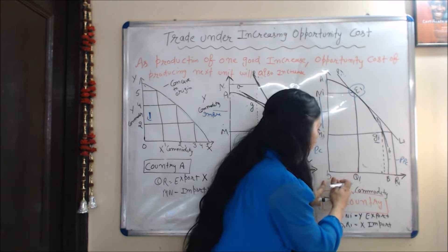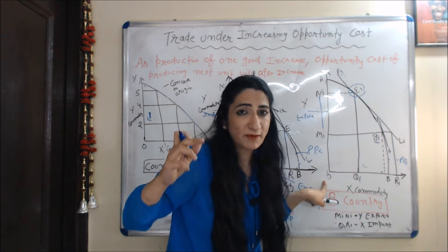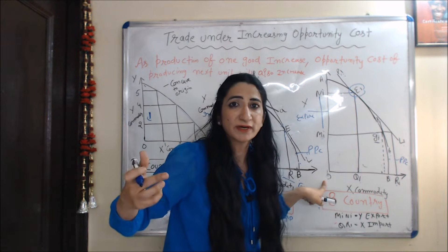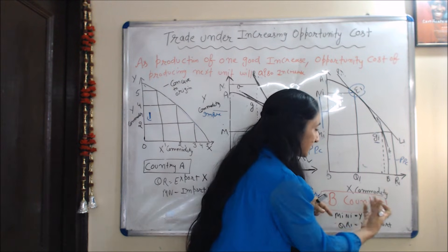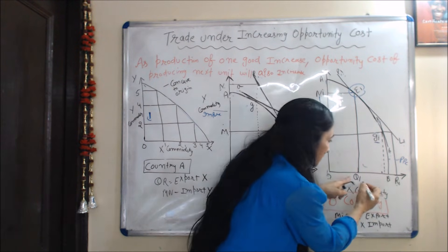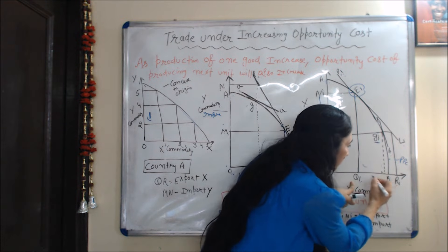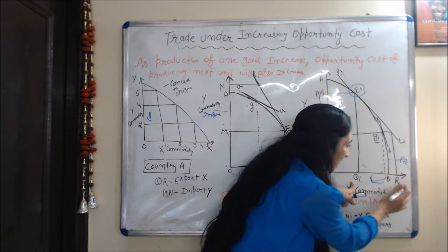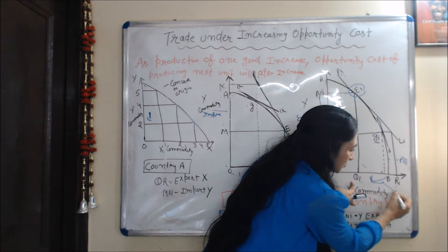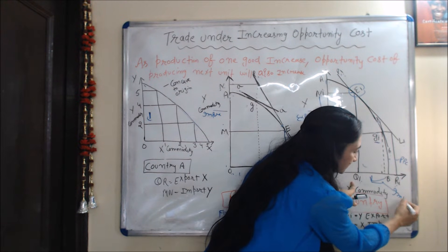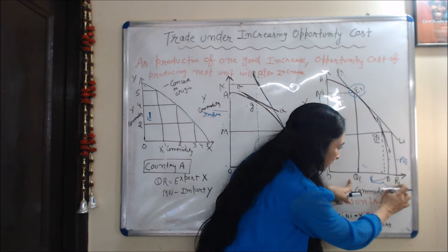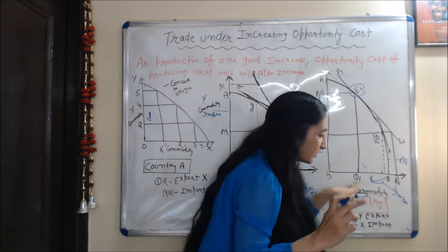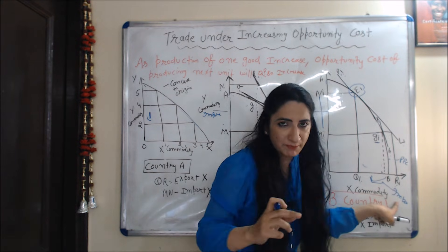Because after trade Country B reduced the production of X commodity, Country B is importing Q1R1 amount of X commodity.